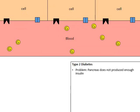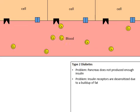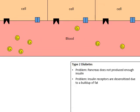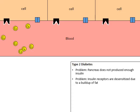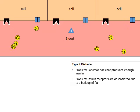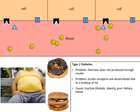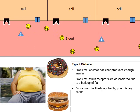For type 2 diabetes, one of the problems may be that the person's pancreas does not produce enough insulin. But for most people who are type 2 diabetics, the problem they face is that the insulin receptors are desensitized due to a buildup of fat. In the animation, fat buildup has been added around the insulin receptors. So when they do produce insulin — and many type 2 diabetics still produce a normal amount — the insulin simply cannot bind to the insulin receptors. An inactive lifestyle, obesity, and poor dietary habits are generally the cause of most individuals who suffer from type 2 diabetes.